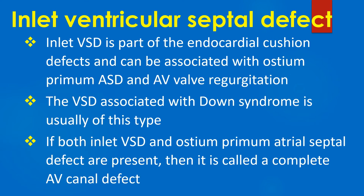Inlet VSD is part of the endocardial cushion defects and can be associated with ostium primum ASD and AV valve regurgitation. The ventricular septal defect associated with Down syndrome is usually of this type. If both inlet VSD and ostium primum ASD are present, it is called a complete AV canal defect. Another name for inlet VSD is canal VSD.